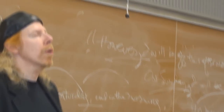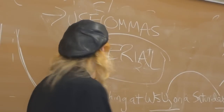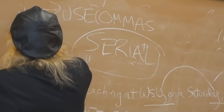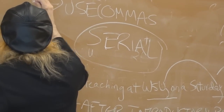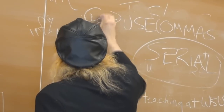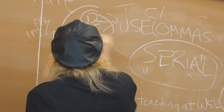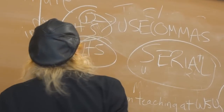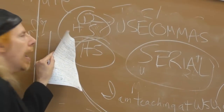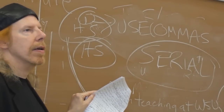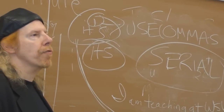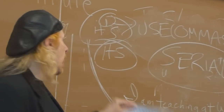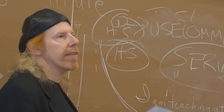Another thing that always comes up in term papers is people not using 'its' (I-T-S) and 'it's' (I-T-apostrophe-S) correctly. There is a difference: 'it's' with an apostrophe means 'it is' — it's a contraction. 'Its' without an apostrophe is a possessive.